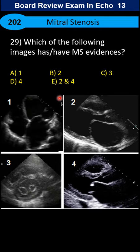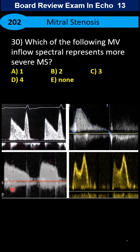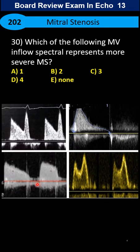Which of the following has the signs of mitral stenosis? Here again, Doppler of the mitral valve inflow — which of the following can represent moderate or significant MS? Compared to each other, which one represents more MS?